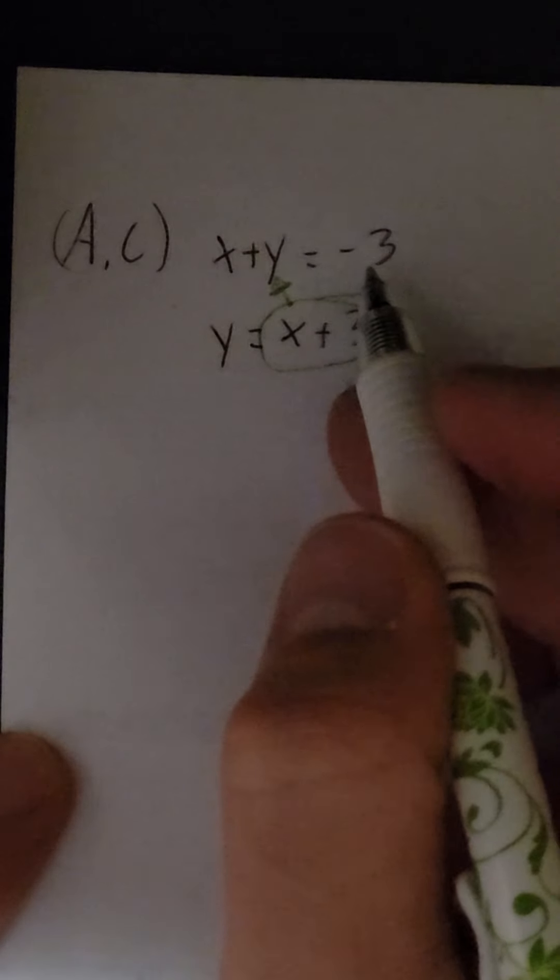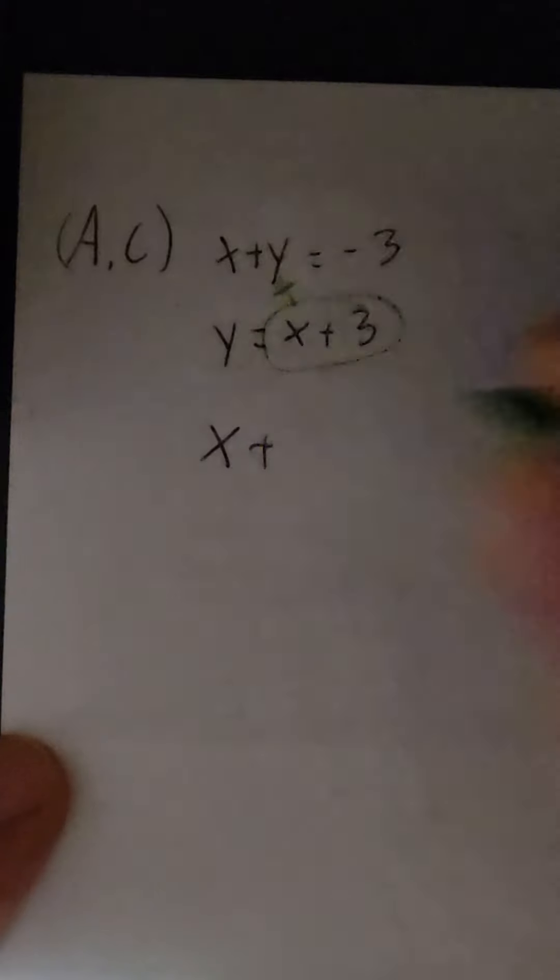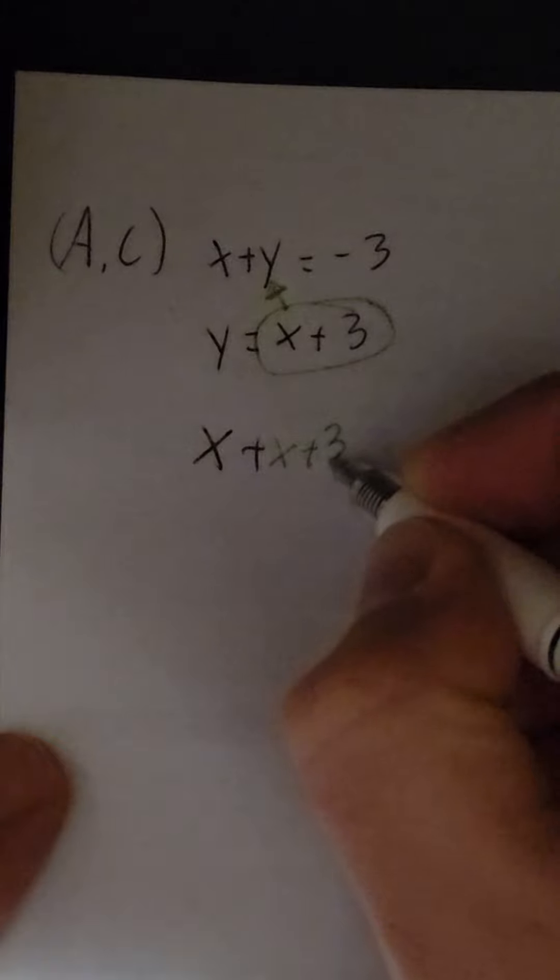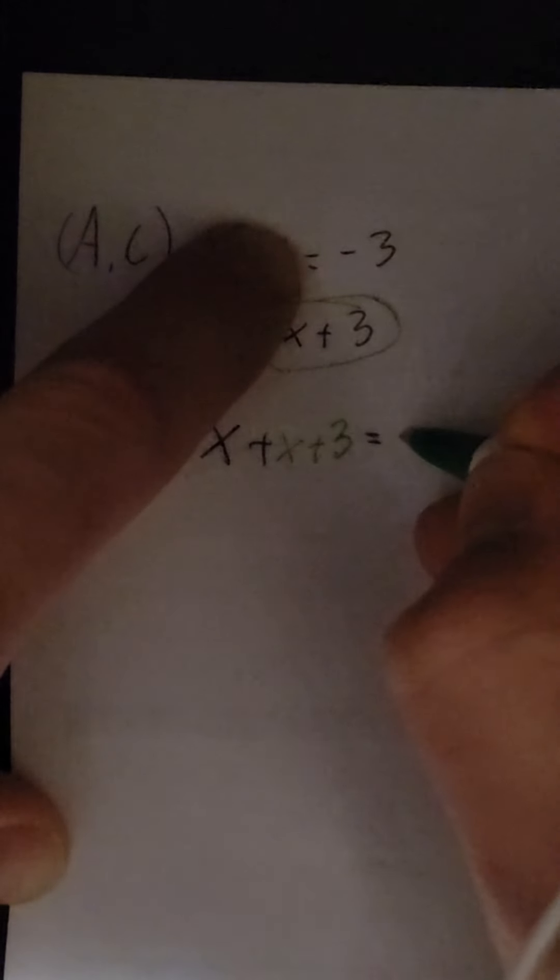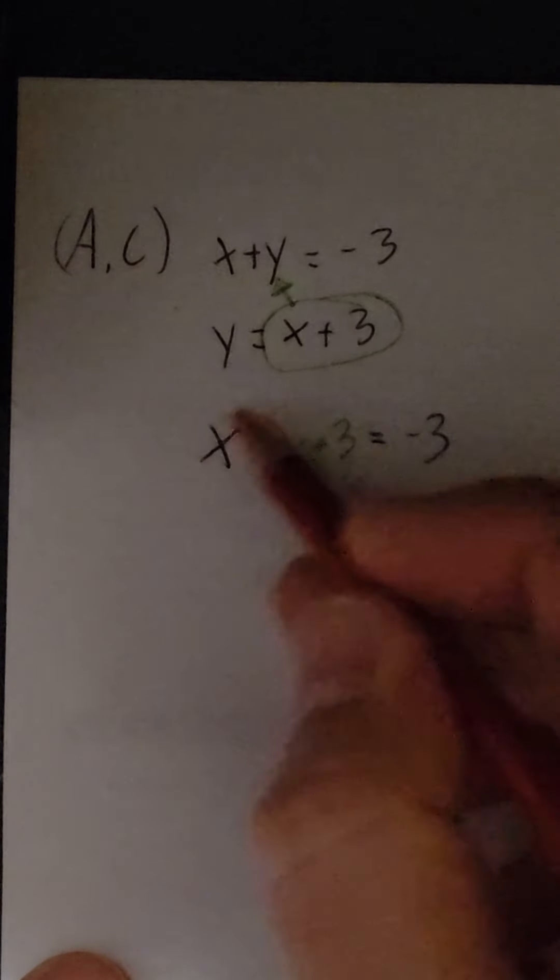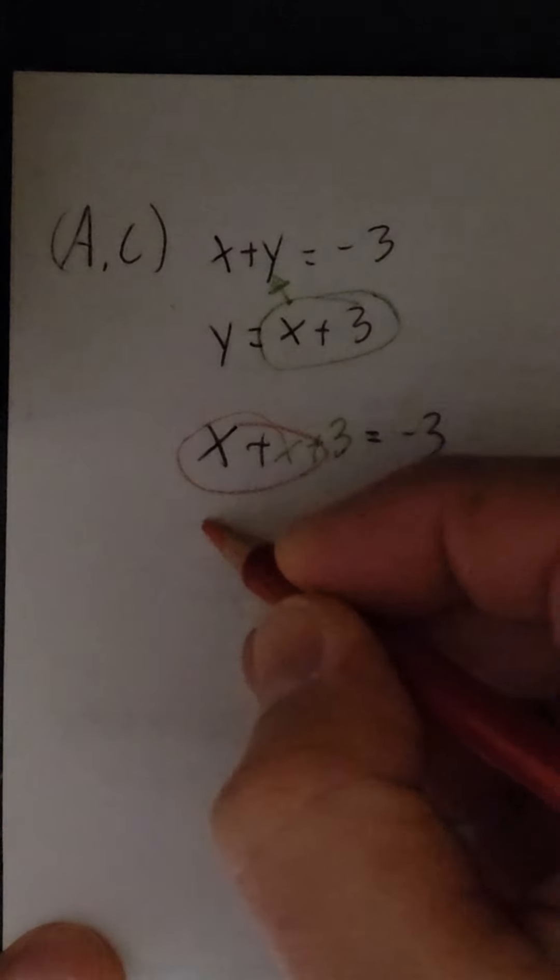That's what we're going to substitute into the other equation for our y value. So we're going to rewrite that first equation. Instead of saying x plus y, we're going to put down x plus what our y is, what we've circled up here, x plus 3. And we continue again through our equation, equals negative 3. Now you add up your like terms.